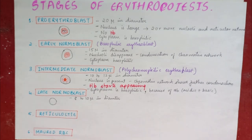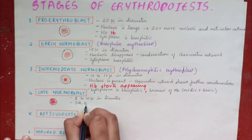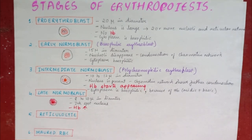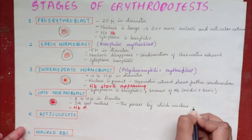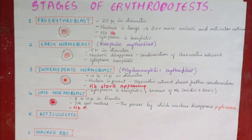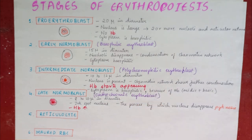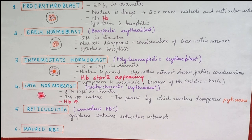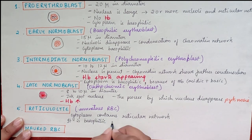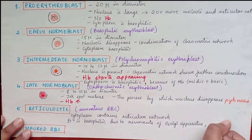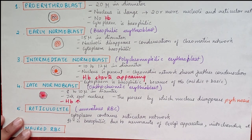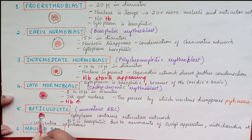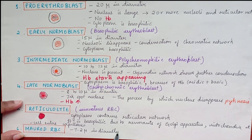Late normoblast is 8 to 10 microns in diameter. There is an ink spot nucleus and the nucleus disappears by a process called karyokinesis. Hemoglobin increases; it is also called the orthochromic erythroblast. Reticulocyte is also known as immature RBC. The cytoplasm contains a reticular network and is basophilic due to remnants of Golgi apparatus and mitochondria. The matured RBC is 7.2 microns in diameter.